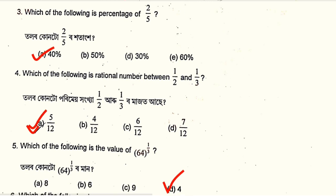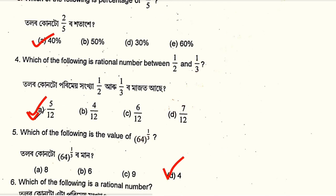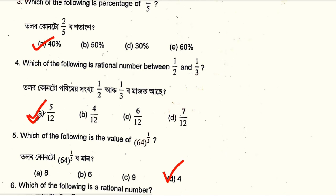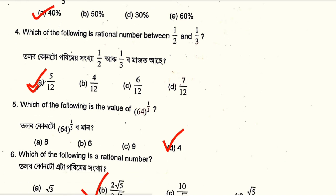Which of the following is a rational number between 1/2 and 1/3? The options are 5/12, 4/12, 6/12, and 7/12. Next question: which of the following is the value of 64 to the power 1/3? The answer is Option D.